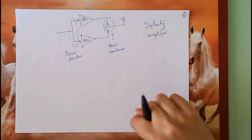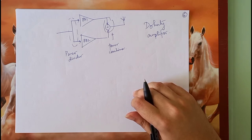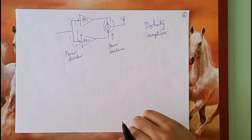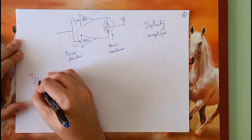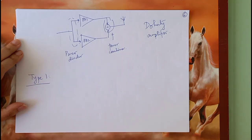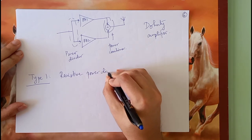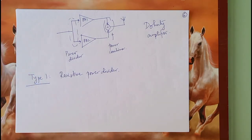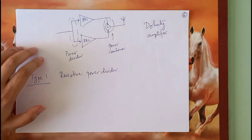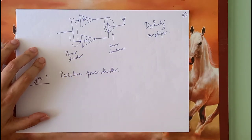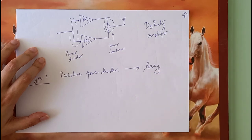Let us see the different ways to implement or design a power divider circuit. The first type is called the resistive power divider. As the word 'resistive' suggests, it consists of resistors. Therefore, the moment we know the circuit consists of resistors, we know it is a lossy network.